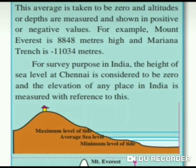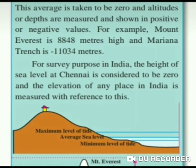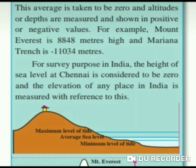Always remember: mean sea level means how the sea level is counted. Elevation or depth of any place is measured from the sea level. The average of the highest high tides and the lowest low tides is considered as sea level. This average is taken to be zero and altitudes or depths are measured and shown in positive or negative values. For example, Mount Everest is 8,848 meters high and the marine trench is minus 11,034 meters. For survey purposes in India, the sea level at Chennai is considered to be zero and the elevation of any place in India is measured with its reference.